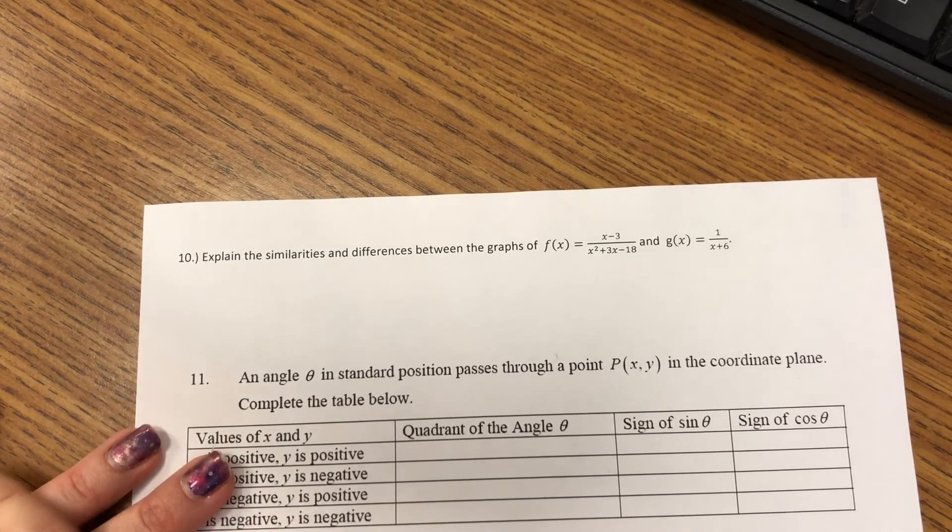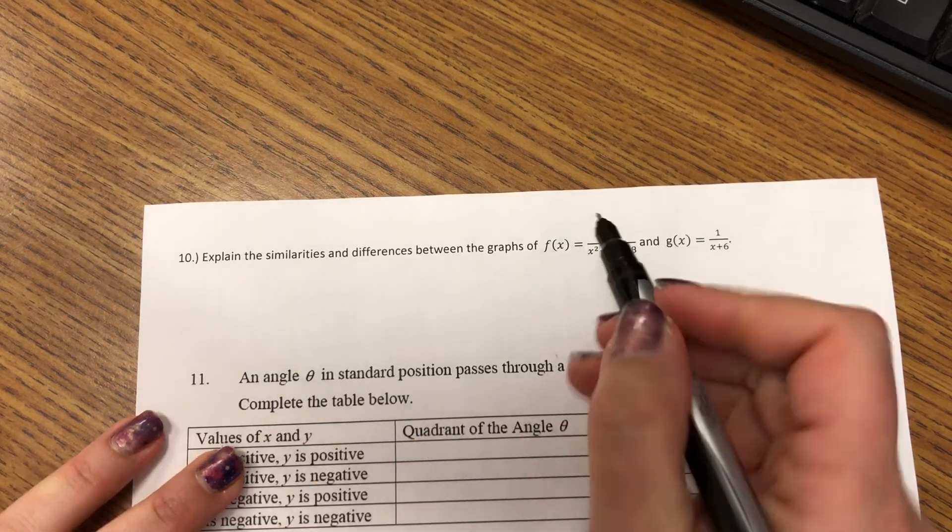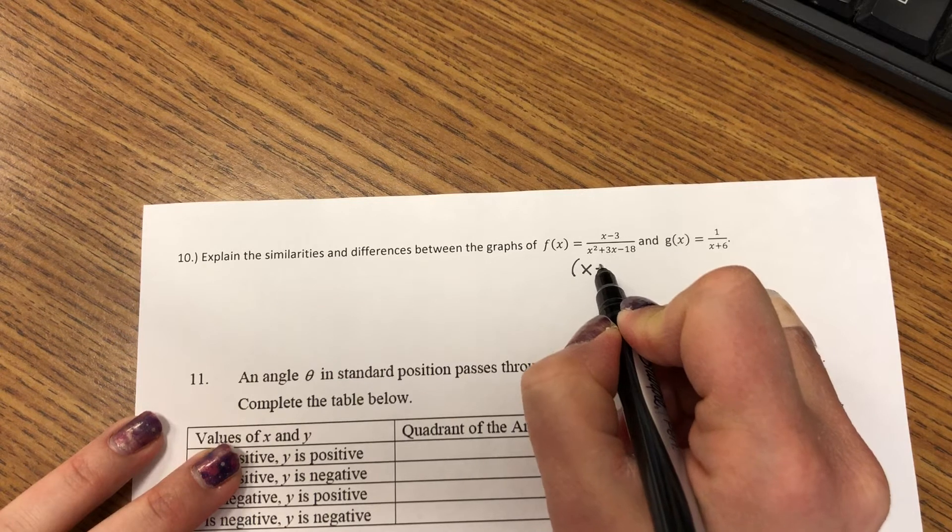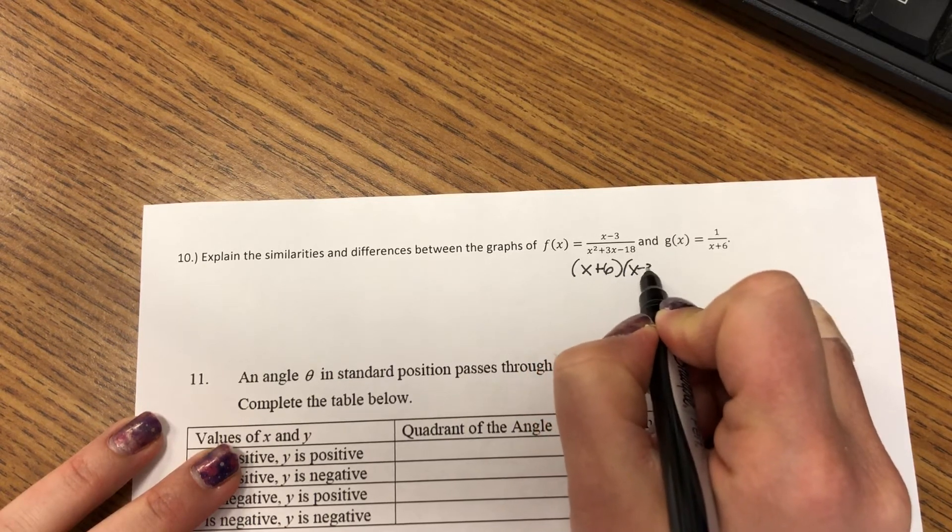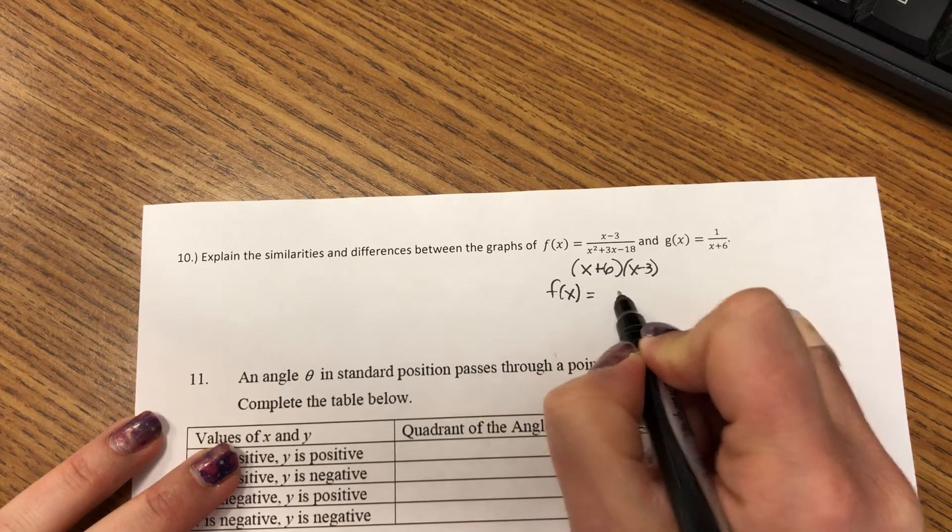Okay, for 10, explain the similarities and differences. So again, let's factor this. And then for f of x, we're left with 1 over x plus 6.